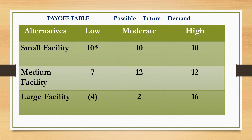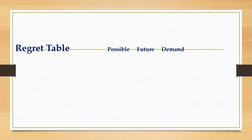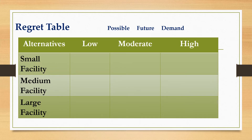We will use the same table from video one of activity two, which still has the different alternatives: small, medium, and large size facility. The first thing you have to do under the minimax regret criterion is to create a regret table. The regret table looks like a payoff table — it has the different alternatives and possible future demand — but the columns will contain regret amounts, not payoff values. Make sure you have a copy of the payoff table and your blank regret table ready.